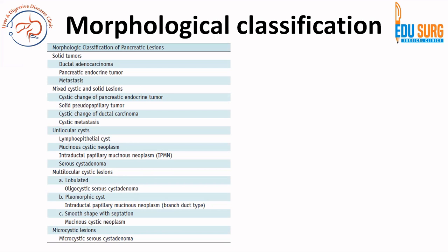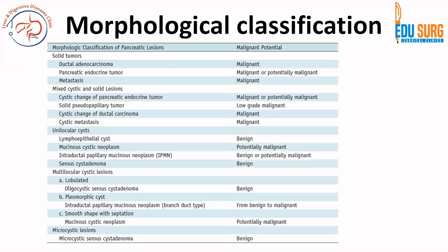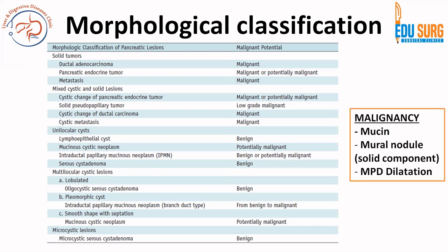Based on the names and morphology, each neoplasm also has a malignant potential. Rather than memorizing a complex table, remember the three M's: if there is mucin, mural nodule, or main pancreatic duct dilatation due to cyst communication or compression, these are features that suggest malignancy. All tumors with mucin are malignant or potentially malignant — mucinous cystic neoplasm (MCN) and intraductal papillary mucinous neoplasm (IPMN). Cysts without mucin, like serous cyst adenoma, are benign.